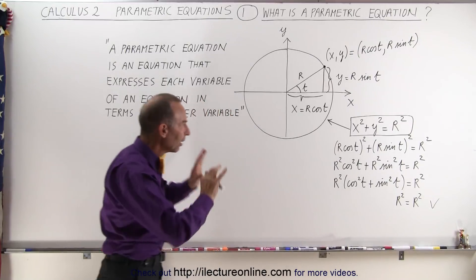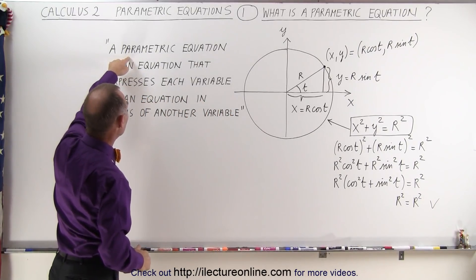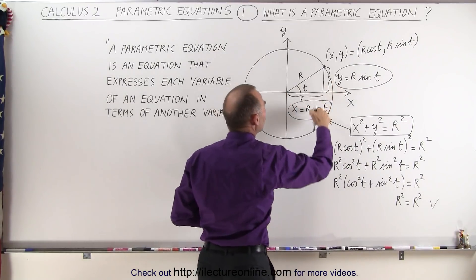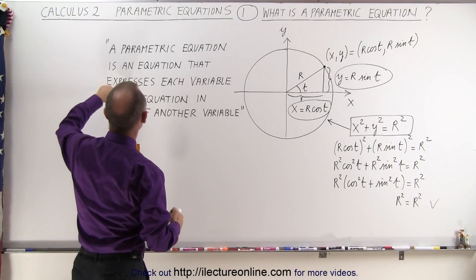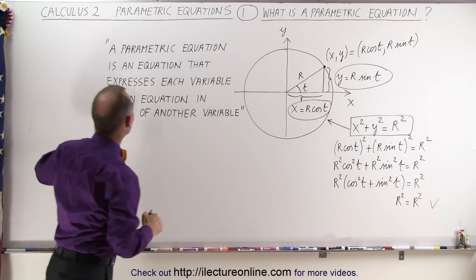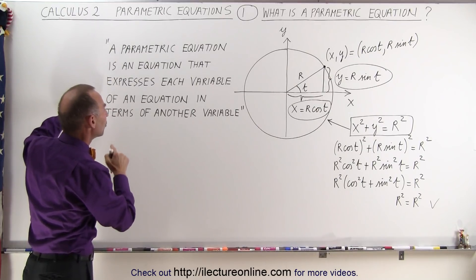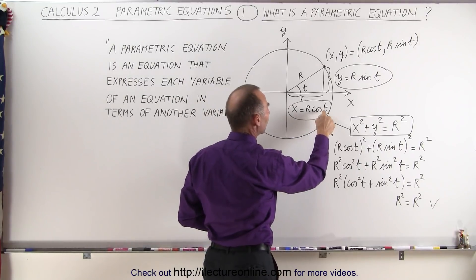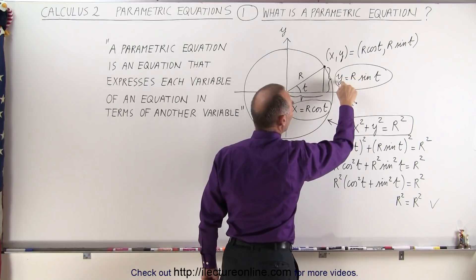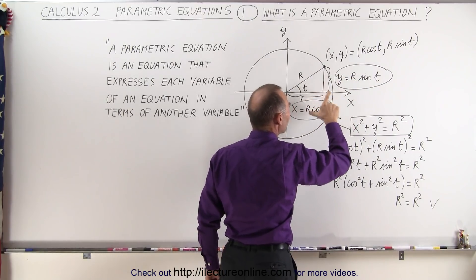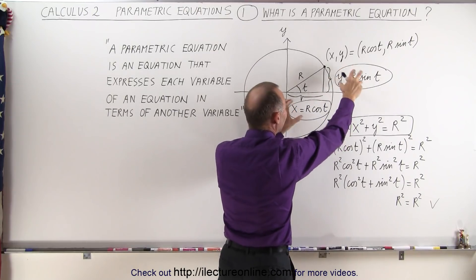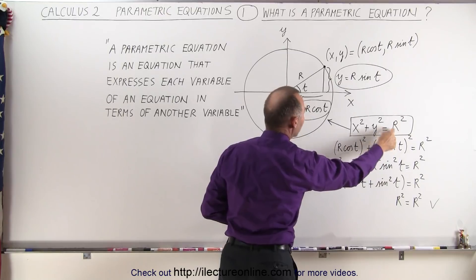By analogy, reading the expression again: a parametric equation — and here we have two parametric equations: y equals r sine theta and x equals r cosine theta. These are equations that express each of the variables, in this case x and y, in terms of another variable t. t is the independent variable; x and y are each dependent variables. Notice that both x and y are expressed in terms of the same independent variable t. That makes these two parametric equations, and together they express the circle with radius r centered at the origin.